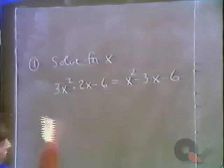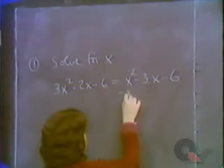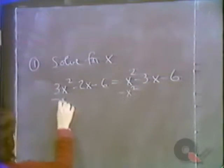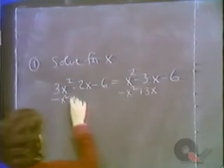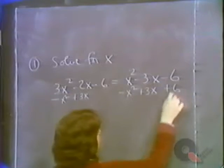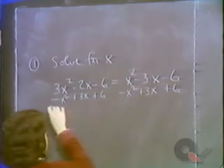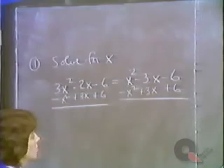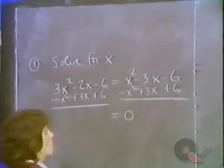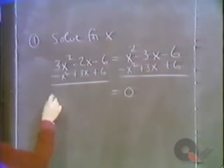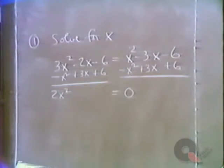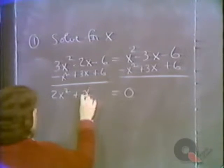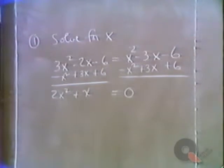Let's bring all the terms over to the left side. We can subtract x squared from both sides of the equation, and at the same time add 3x to both sides and add 6 to both sides. This gives us zero on the right-hand side. On the left-hand side we have 3x squared minus x squared, that's 2x squared; minus 2x plus 3x is plus x; and minus 6 plus 6 gives us zero.